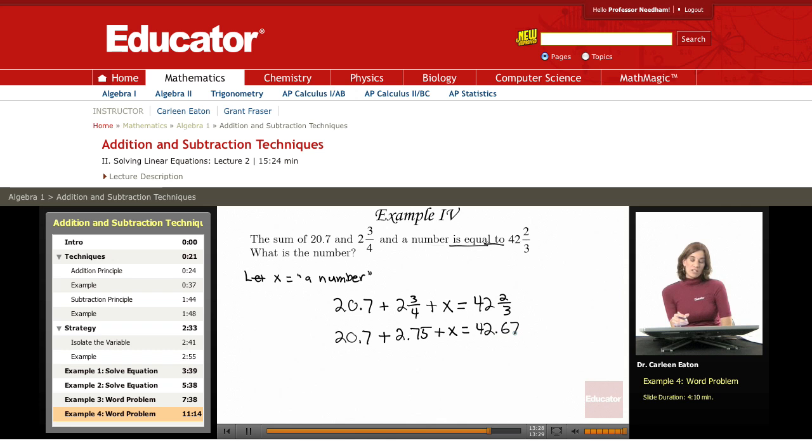I'm rounding to the nearest hundredths here, so I'm going to call 2/3rds 42.67. Before I go on, I'm going to add the two numerical values on the left to further simplify it before I start trying to isolate the variable. And if I add 20.7 and 2.75, I'll come up with 23.45 plus x equals 42.67.